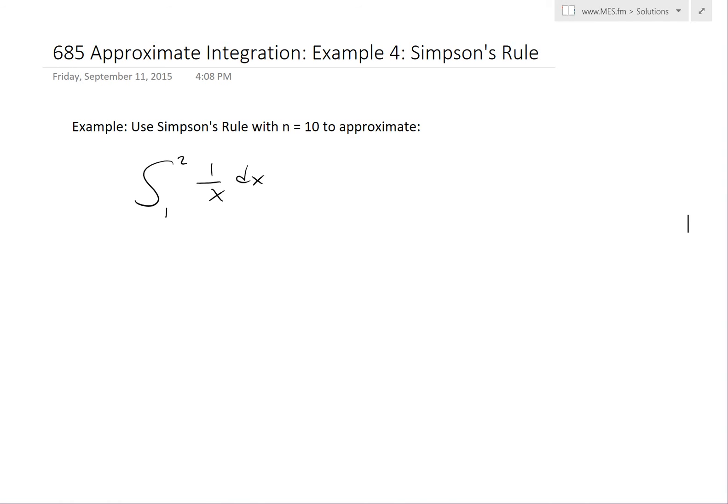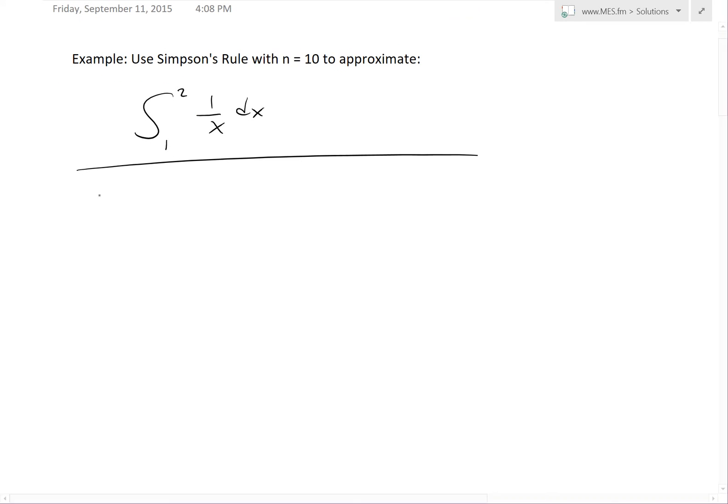Recall from my earlier video, I went over Simpson's Rule and its proof. It's an approximation method that uses parabolas as opposed to rectangles or trapezoids or any straight-edged shape. Recall the formula.